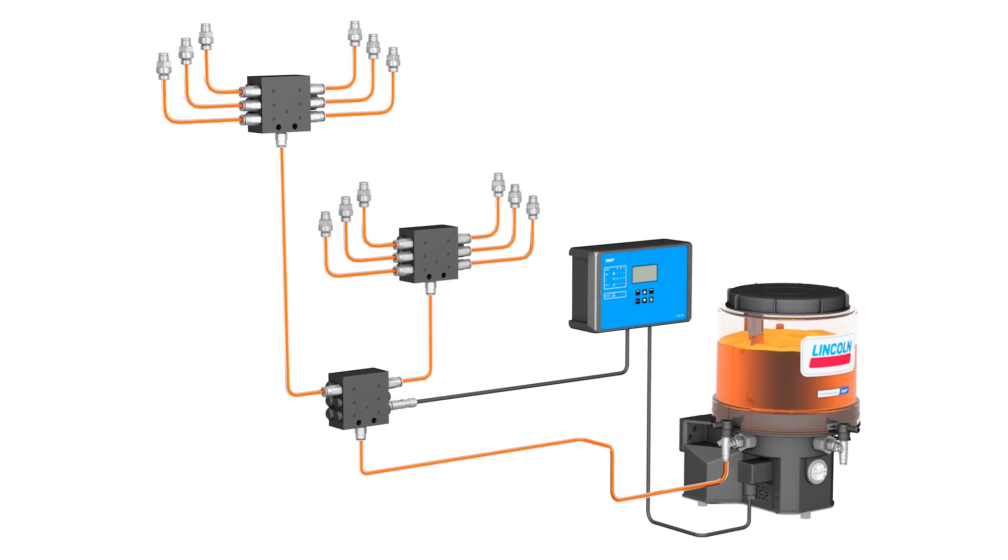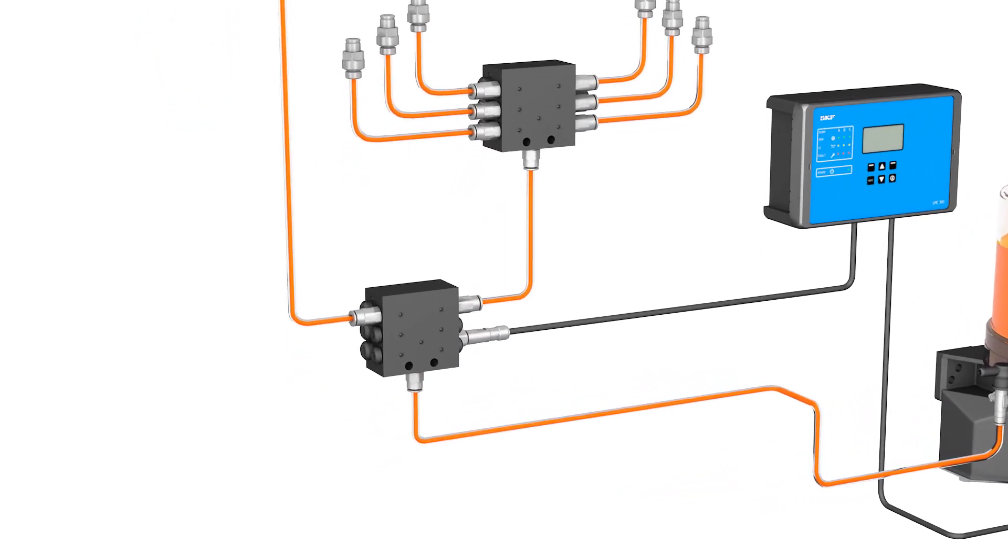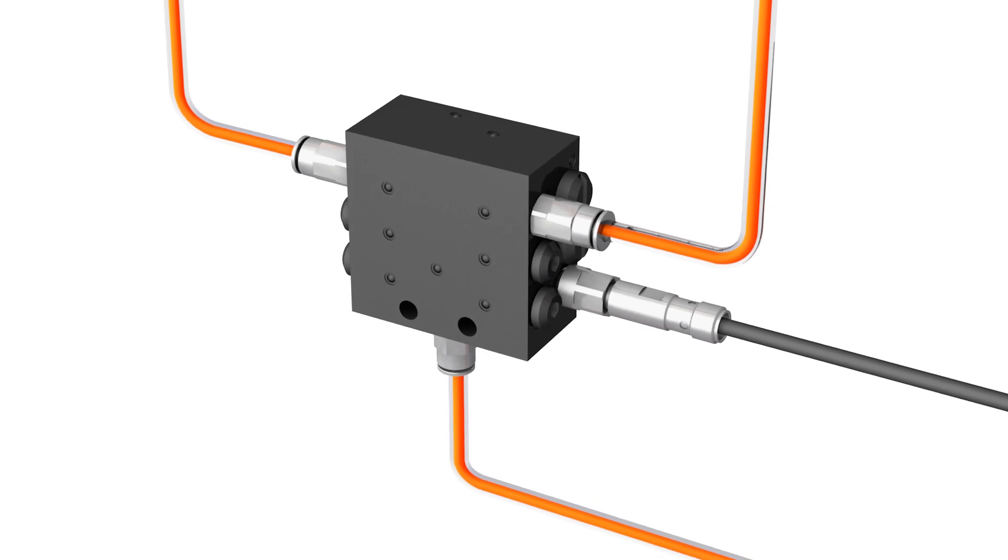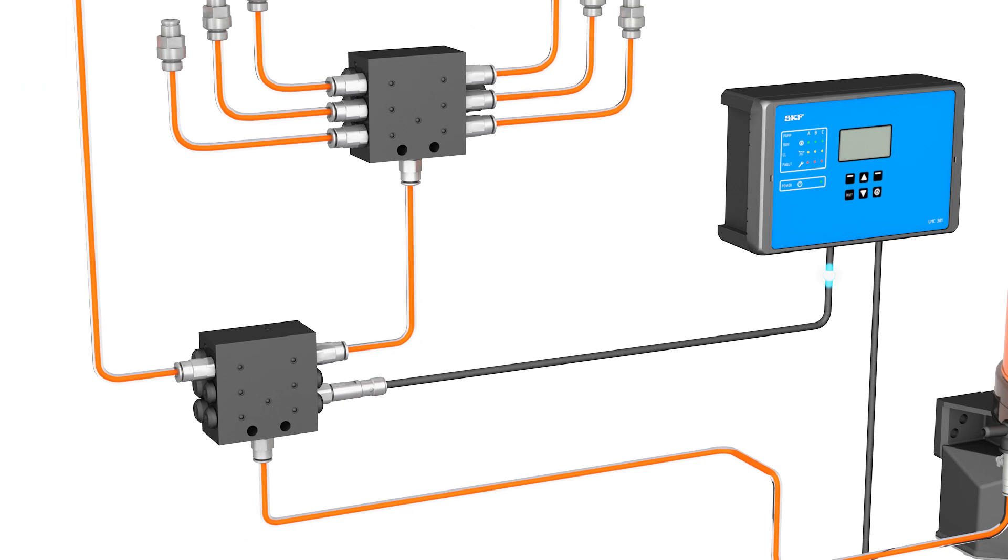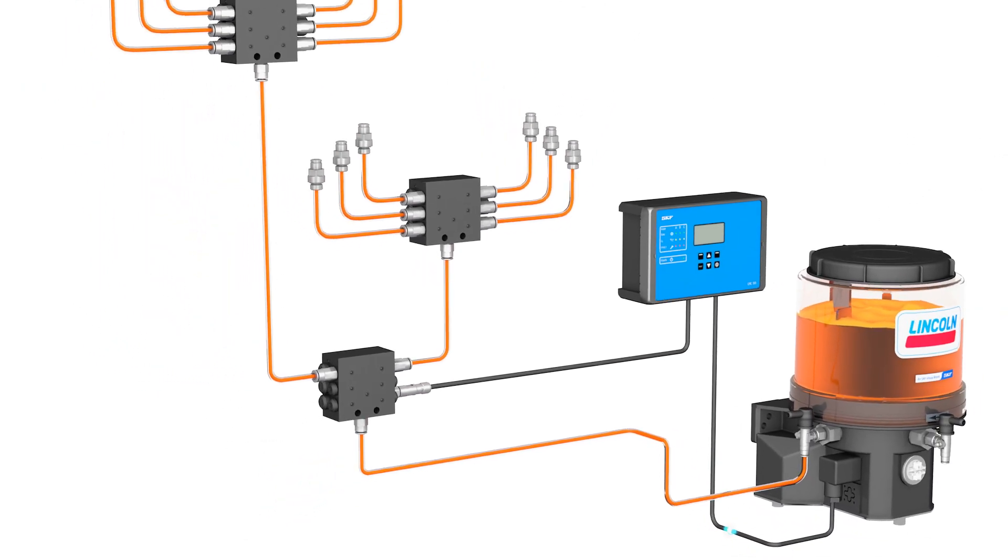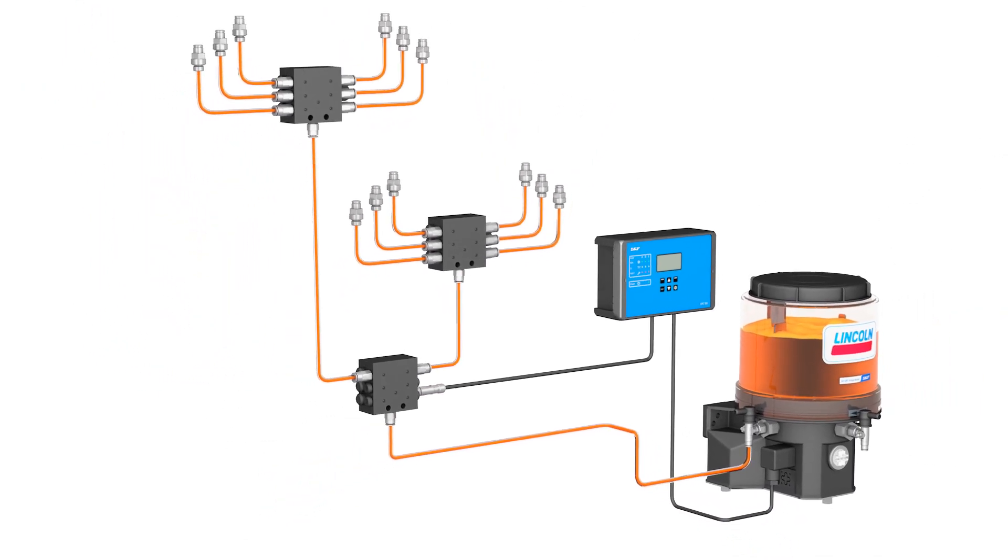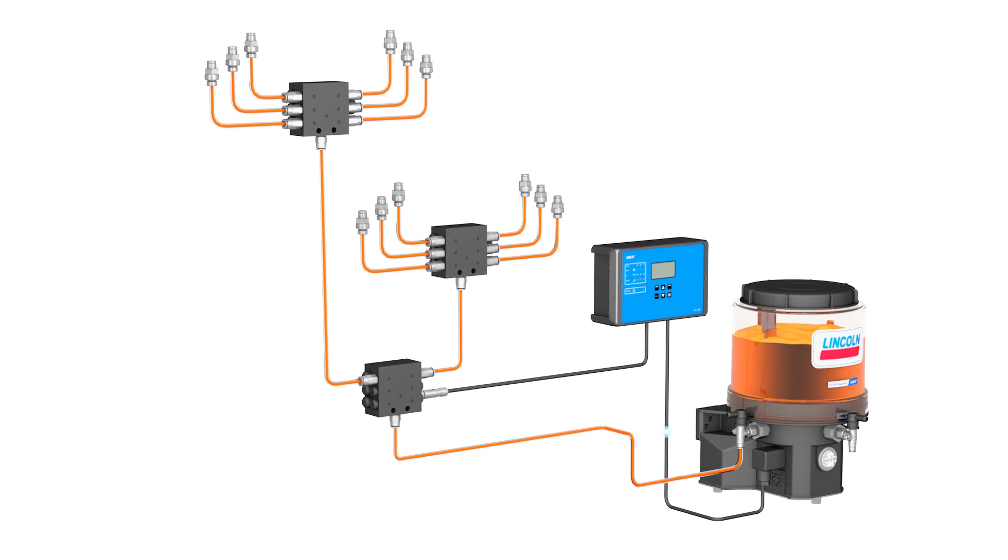Therefore, one piston detector can monitor an entire system. After completing the pre-set number of lubrication cycles, the piston detector sends a signal to the control unit. After an adjustable pause time interval, the next cycle starts.